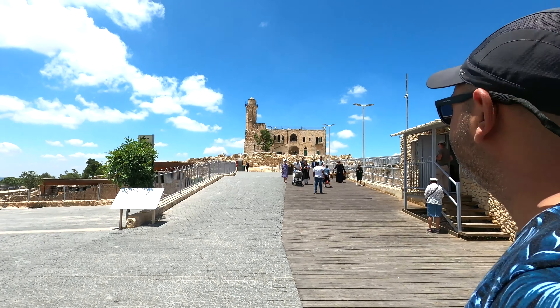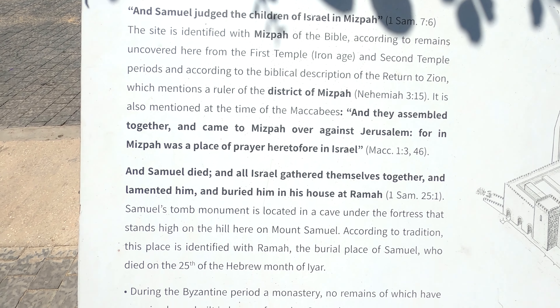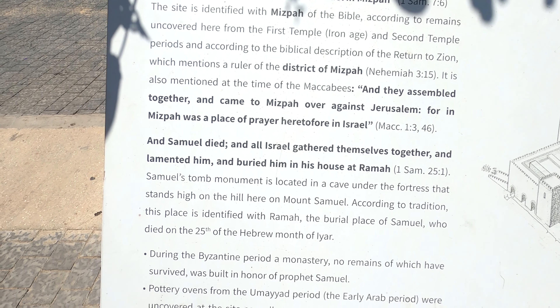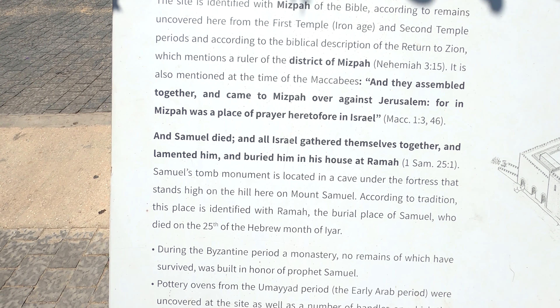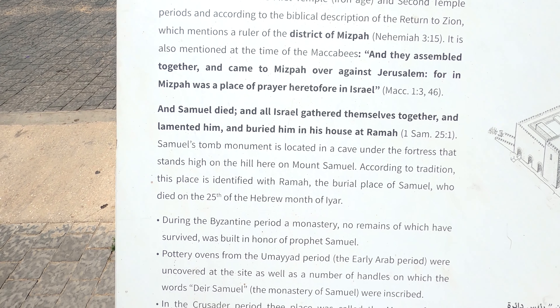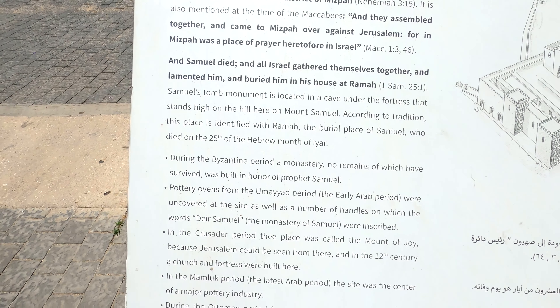When we go up to the mosque on the roof we will see biblical Gibeon and where it is. This is the Mitzbe, which is the high place, where Samuel gathered the people to elect the new king.